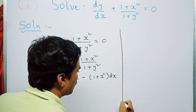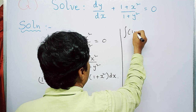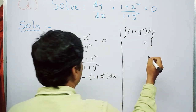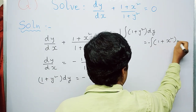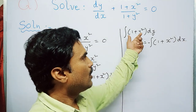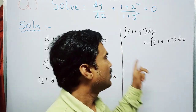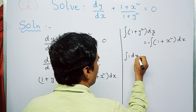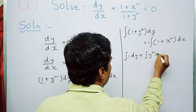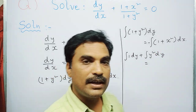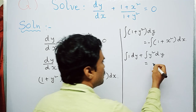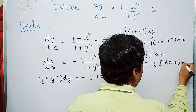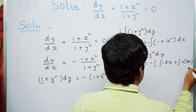The next step is to integrate both sides: ∫(1 + y²) dy = ∫−(1 + x²) dx. We use the integration decomposition method, splitting each side. On the left: ∫1 dy + ∫y² dy. On the right: −∫1 dx − ∫x² dx.